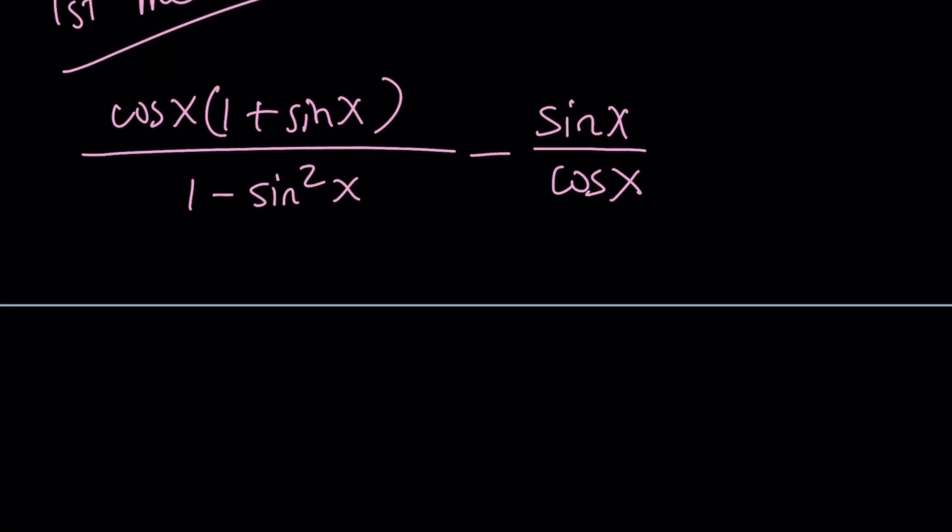Great. Now, here's what we're going to do. 1 minus sine squared, from the famous Pythagorean theorem, sine squared x plus cosine squared x is equal to 1.